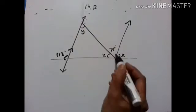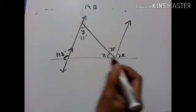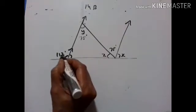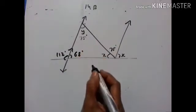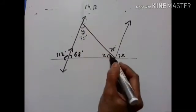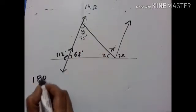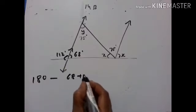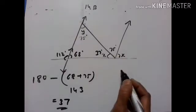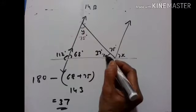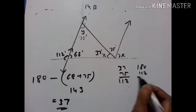These two are parallel lines. If this is 75, Y is also 75 degrees — alternate angles. This is 112, so this is 180 minus 112 equals 68 degrees. This is 70 and this is 75 and this is 68. X is equal to 180 minus (68 plus 75) equals 37 degrees. Then 37 plus 75 equals 112, and X is equal to 180 minus 112 equals 68 degrees.